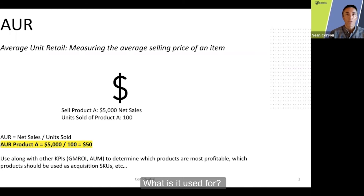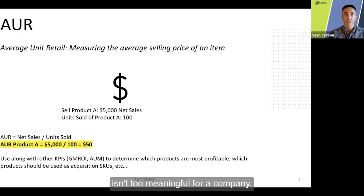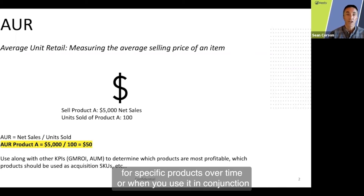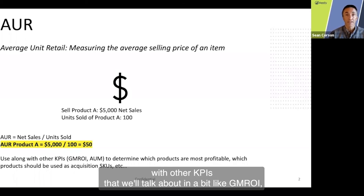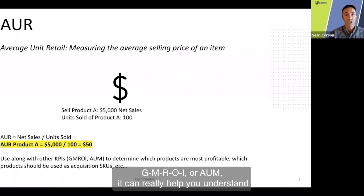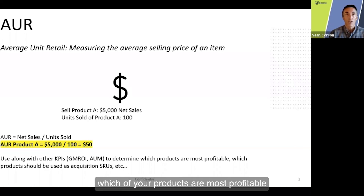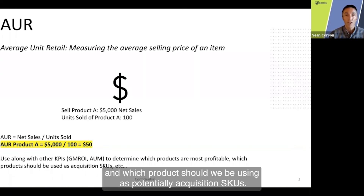So how do you use this? What is it used for? Well, AUR in and of itself, that number isn't too meaningful for a company. However, when you start looking at things like trends in AUR for specific products over time, or when you use it in conjunction with other KPIs, like GMROI or AUM, it can really help you understand which of your products are most profitable and which products you should be using as potentially acquisition schemes.